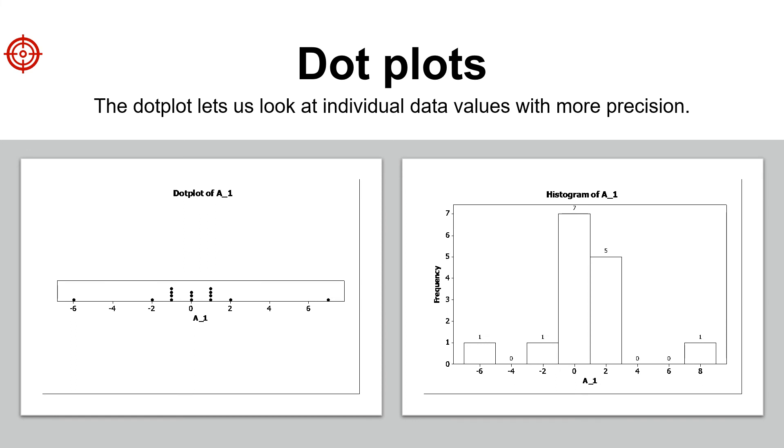For example, with the small data set typically used for dot plots, we might not get a sense of the overall shape of the distribution, but we can see where the data are clustered more or less densely. A dot plot shows the range of data values and can help identify any unusual values or outliers.